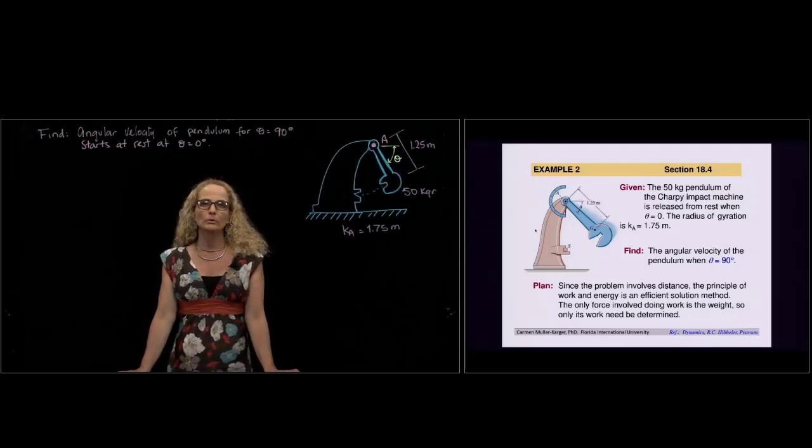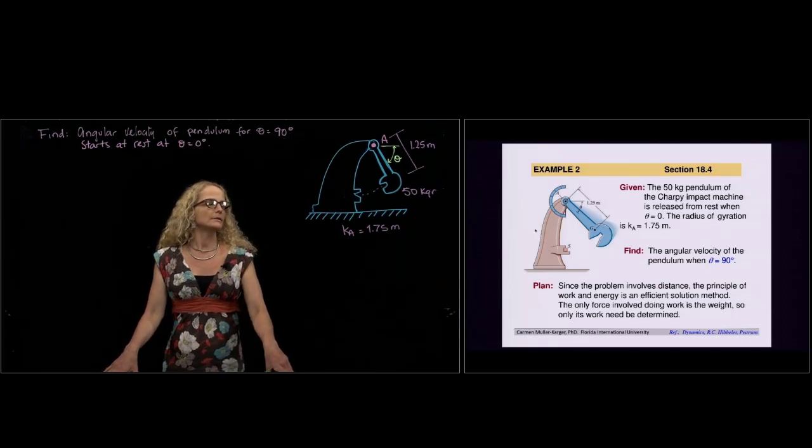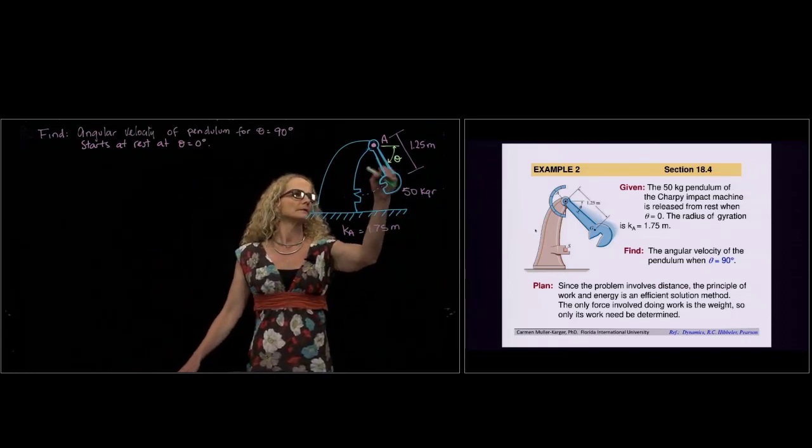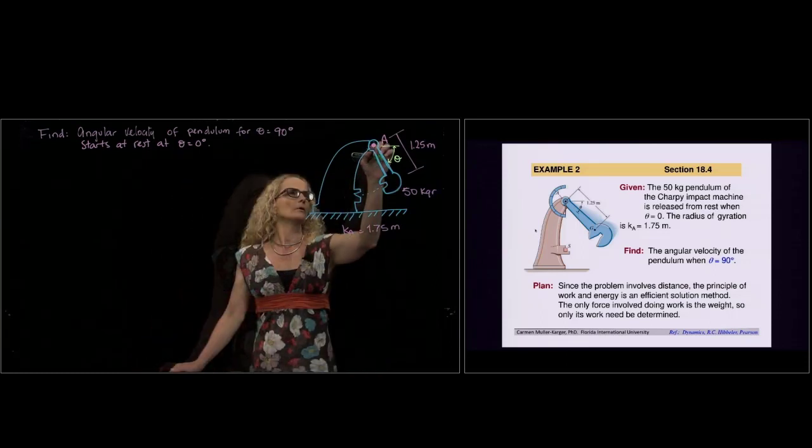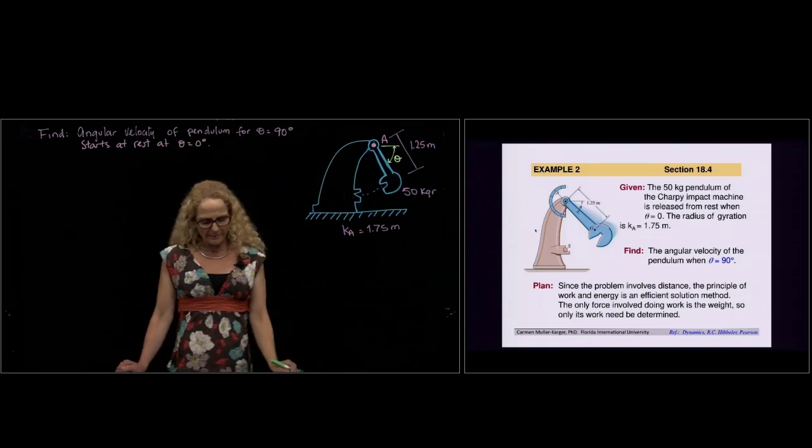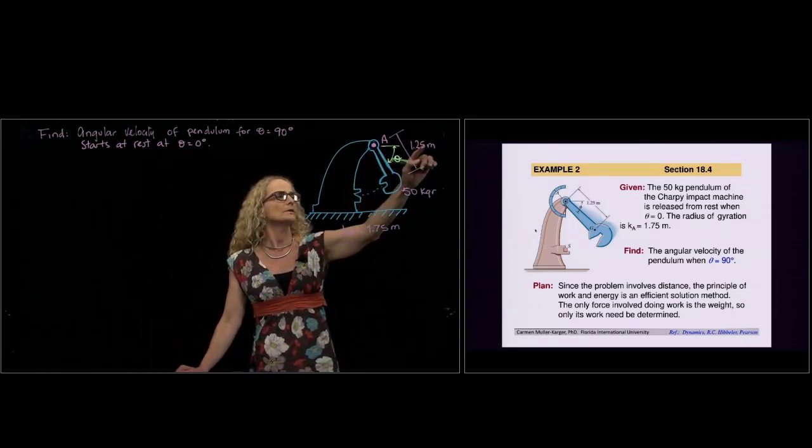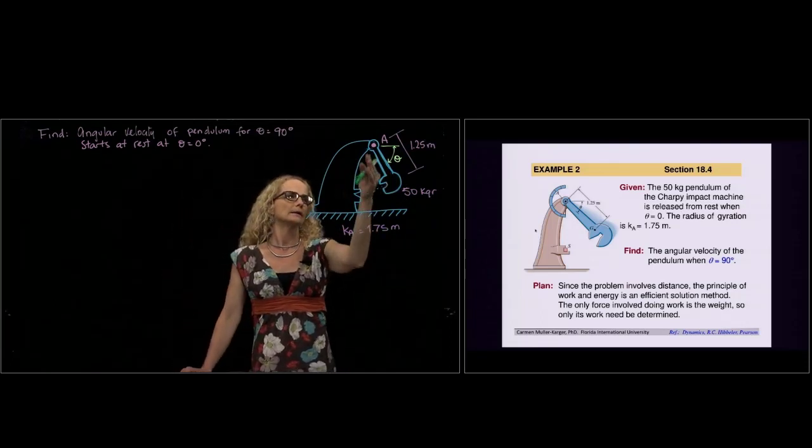Hi, this is example number 2 of section 18.4. So here we have this pendulum that has a mass of 50 kilograms and rotates about point A, and is released from rest when theta is equal to zero, and they want us to find the velocity when theta is 90 degrees.